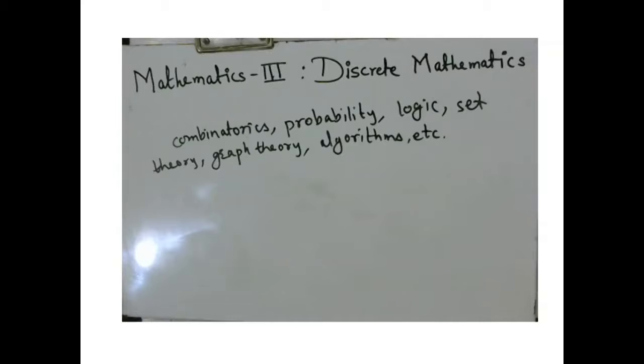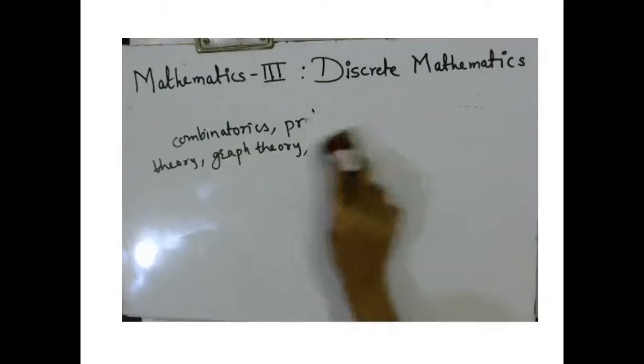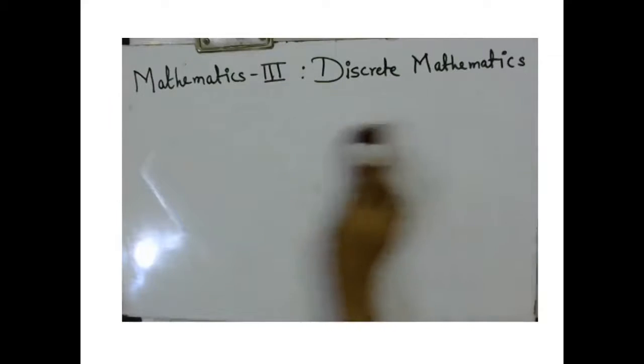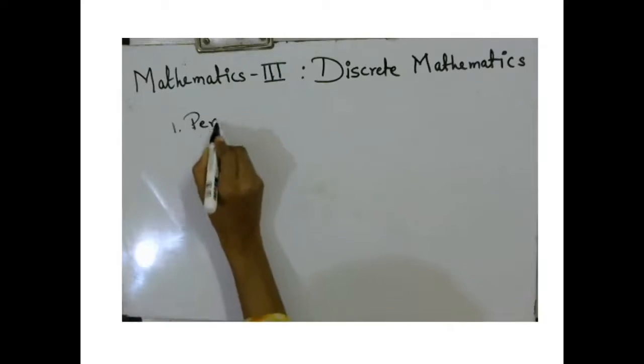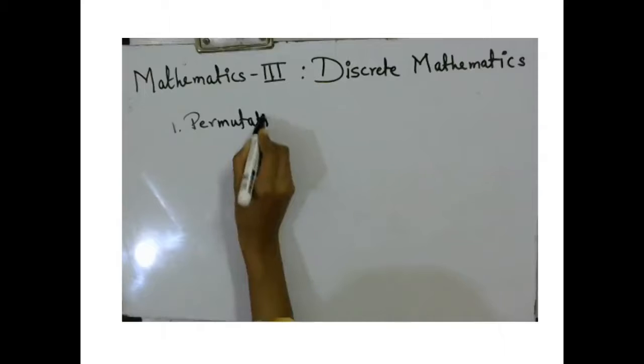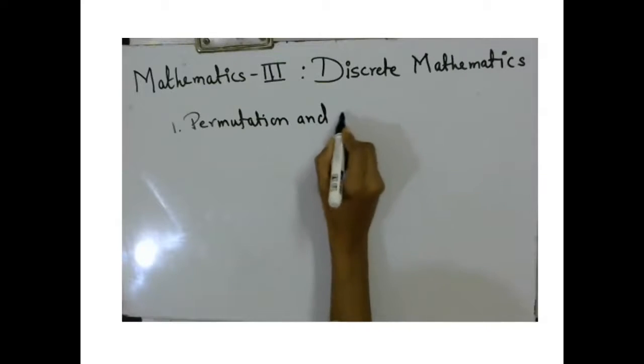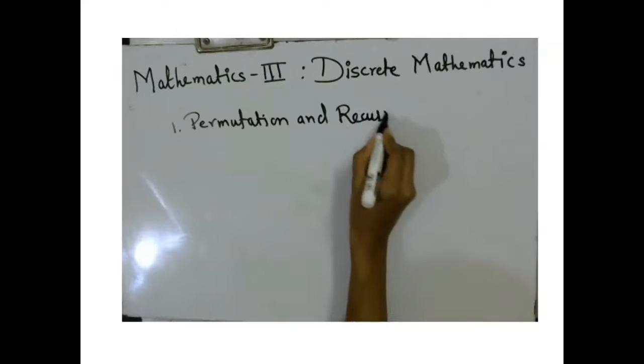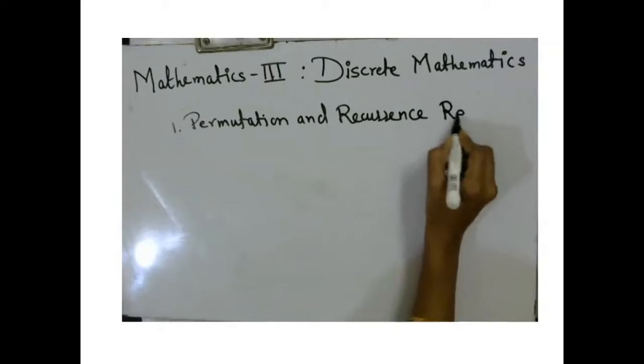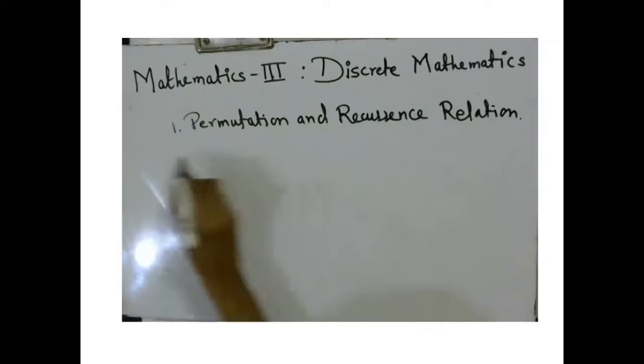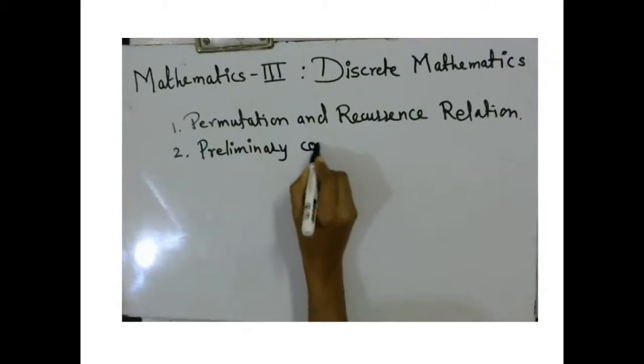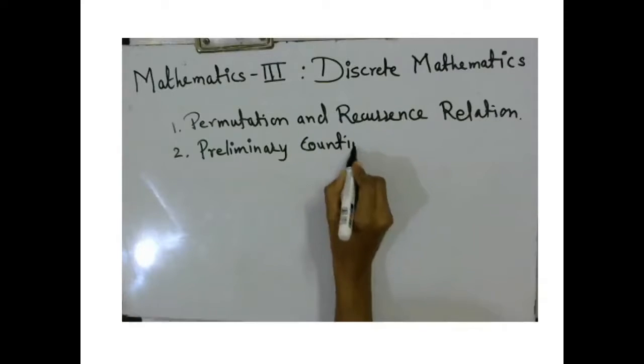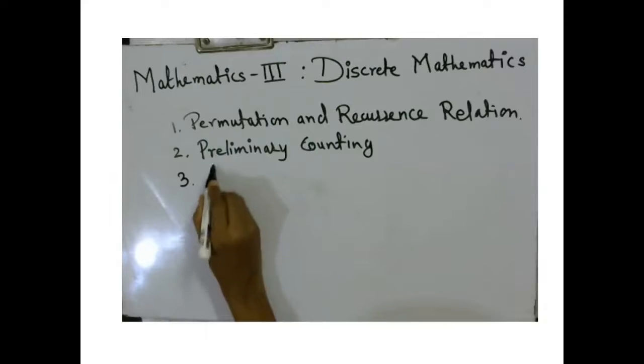In this course of discrete mathematics, you will be having three units. The first unit is permutation and recurrence relation. The second unit is preliminary counting, and the third unit is advanced counting.